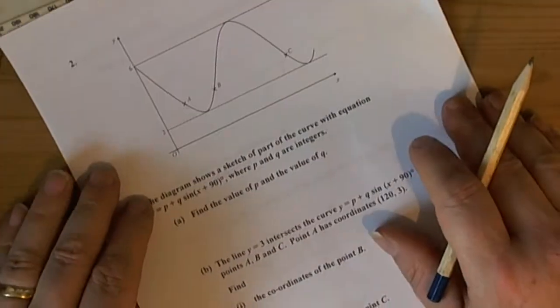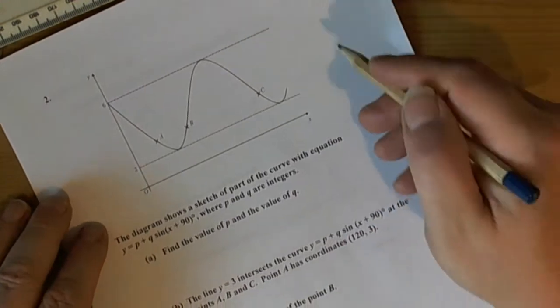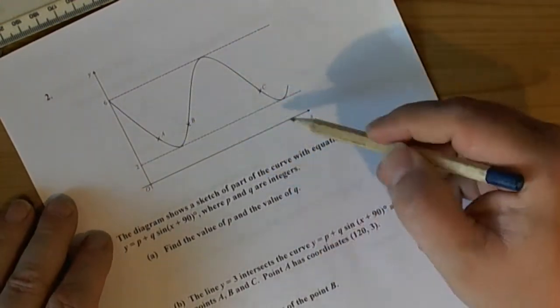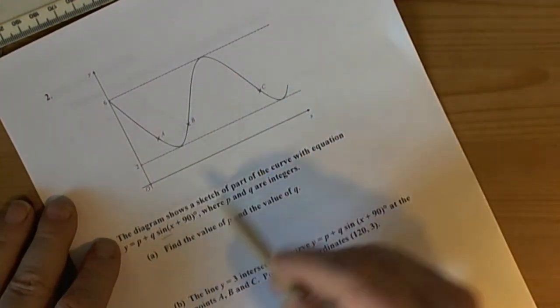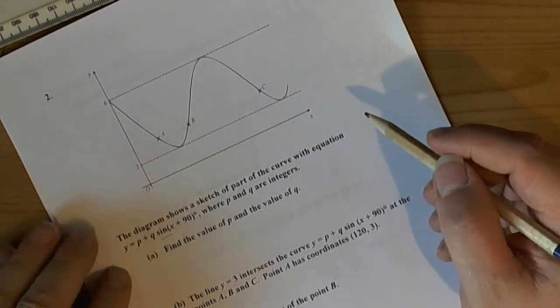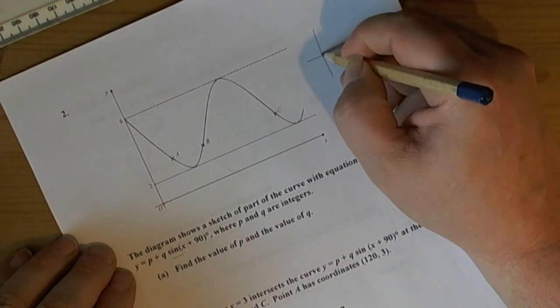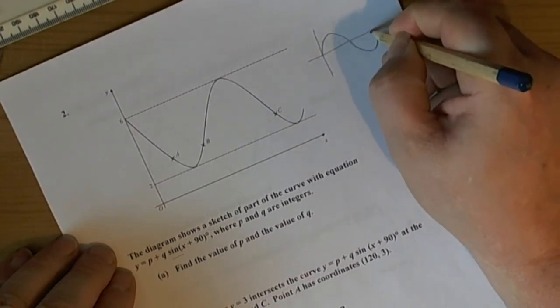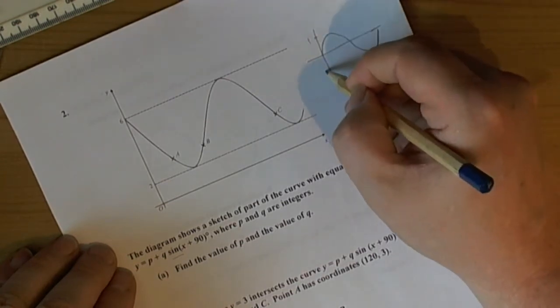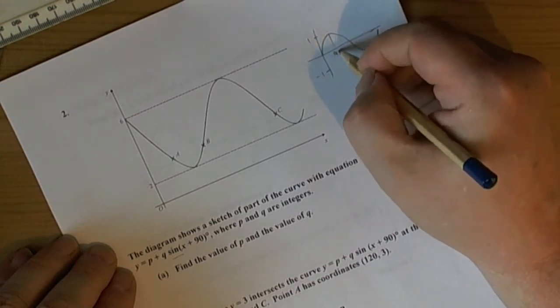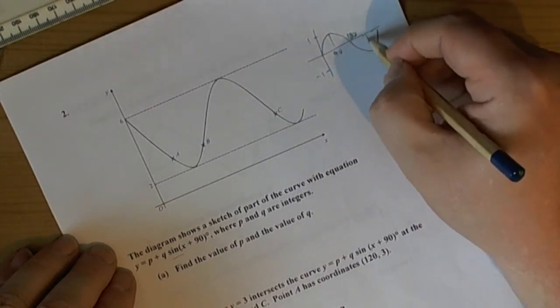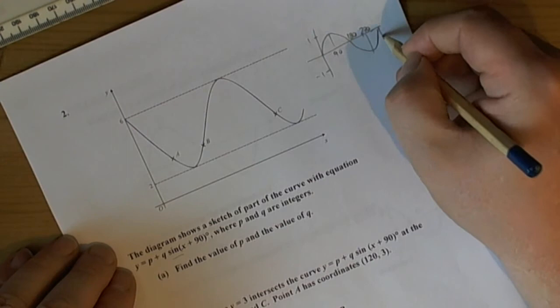Now the sine and cosine curves can get a bit more complicated than that so we need to look at something a bit more complicated. And here they're telling us that this sine curve has been transformed in some way. So again if we start with the basic sine curve it will give us an idea of what we're doing. So 1 to minus 1, 90, 180, 270 and the full period at 360.